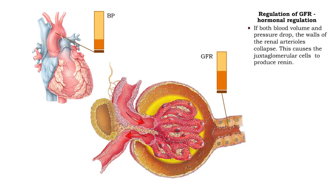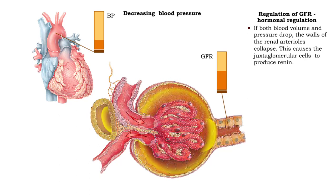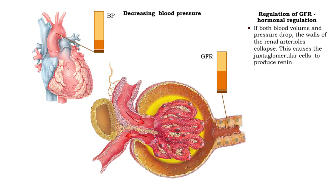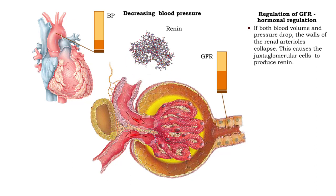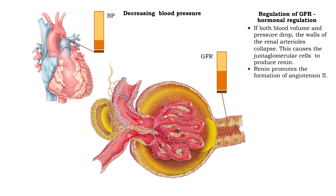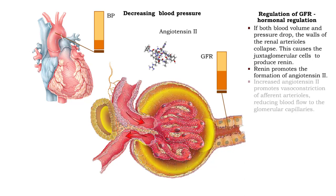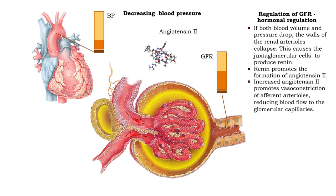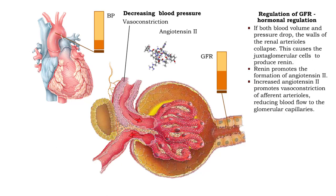If both blood volume and pressure drop, the walls of the renal arterioles collapse. This causes the juxtaglomerular cells to produce renin. Renin promotes the formation of angiotensin 2. Increased angiotensin 2 promotes vasoconstriction of afferent arterioles, reducing blood flow to the glomerular capillaries.